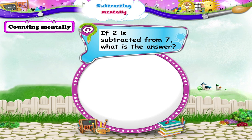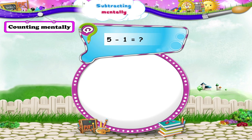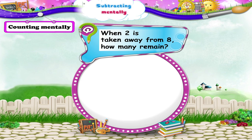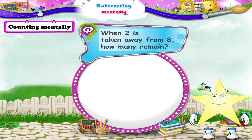If 2 is subtracted from 7, what is the answer? 7 minus 2 equals 5. And 5 minus 1 is... 5 minus 1 is equal to 4. When 2 is taken away from 8, how many remain? 8 minus 2 equals 6. Very good, Starry!